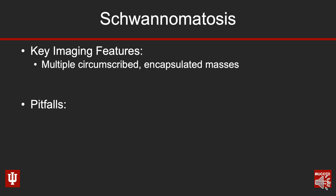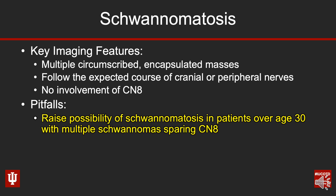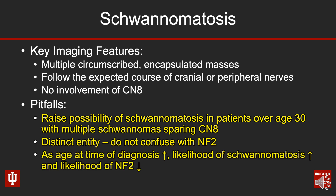To wrap up: our diagnosis here was schwannomatosis. The key imaging features to know — these patients will have multiple circumscribed, encapsulated masses that tend to follow the expected course of cranial or peripheral nerves. These schwannomas can occur literally anywhere in the body, so look for those typical locations of the major cranial nerves as a clue. Importantly, these patients cannot have vestibular schwannomas. A key pitfall is that this can be misdiagnosed as NF2 — keep schwannomatosis in mind particularly in patients older than 30 who have multiple schwannomas that spare the vestibular nerves.